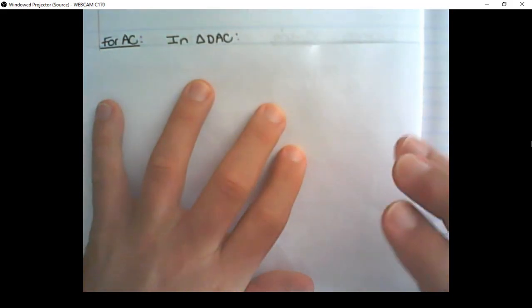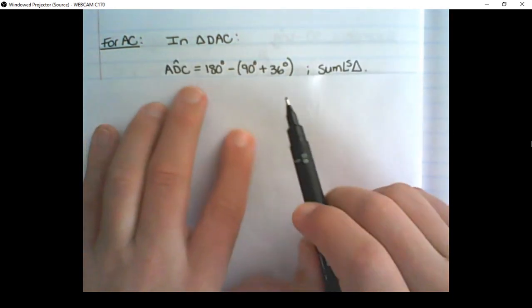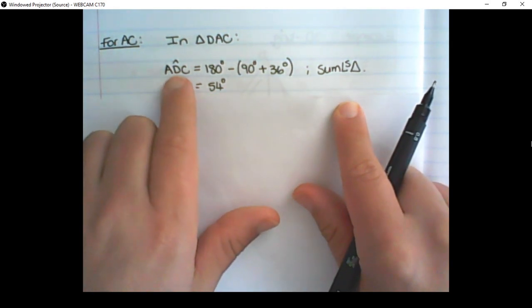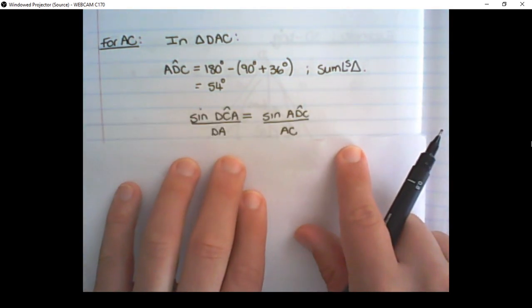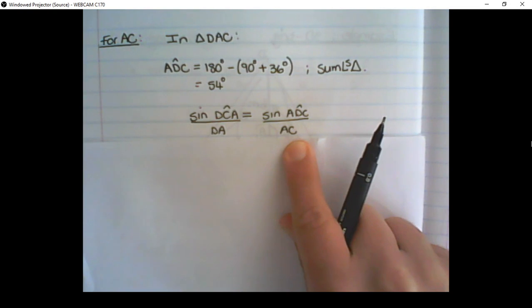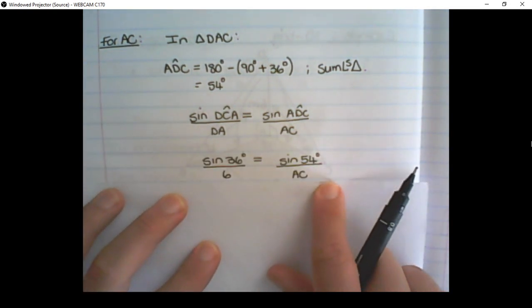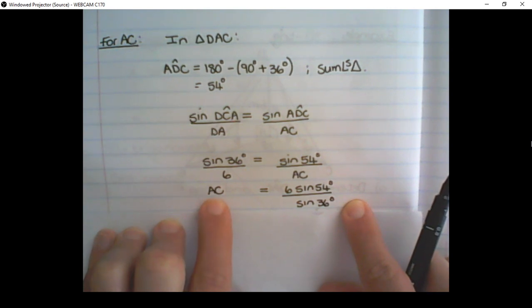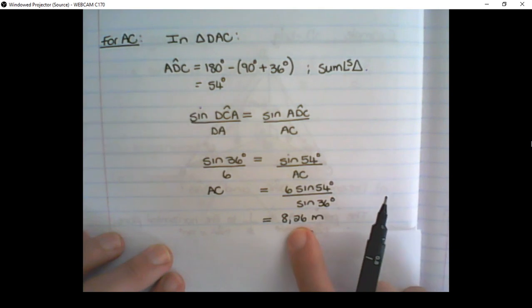So for AC, in triangle DAC, I solve angle D using the sum of angles in a triangle. Remember, we're noting it properly. Then, I create the sine ratio. Substitute the known values. Cross multiply and divide to find AC. This is similar to the calculation as AB. And then solve it using my calculator.